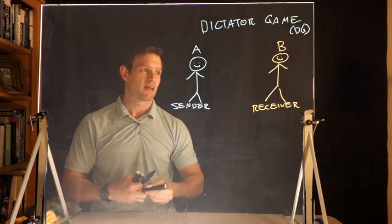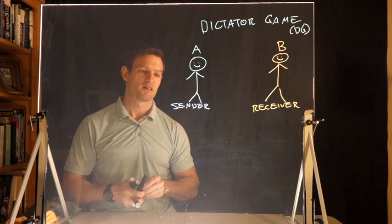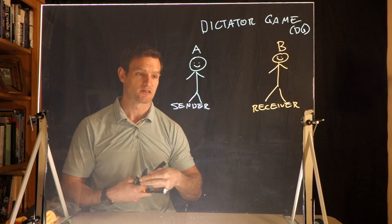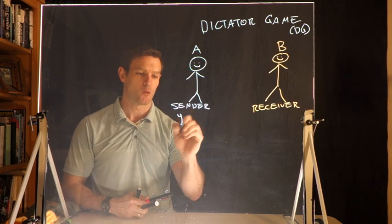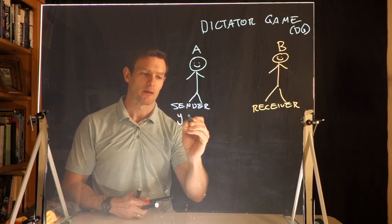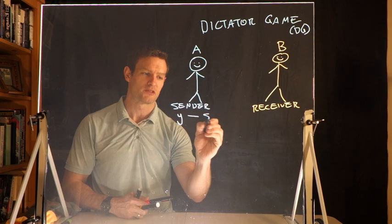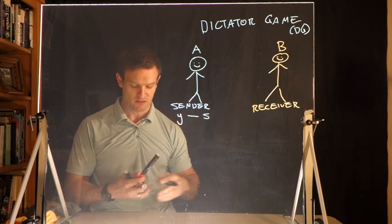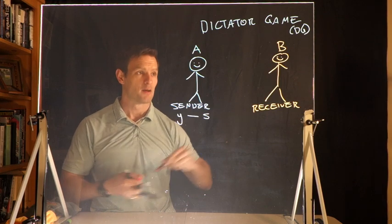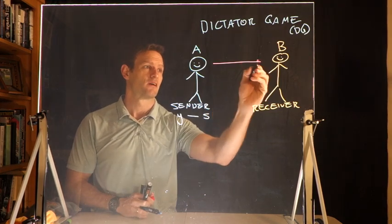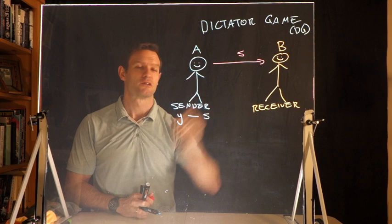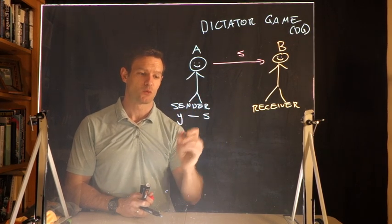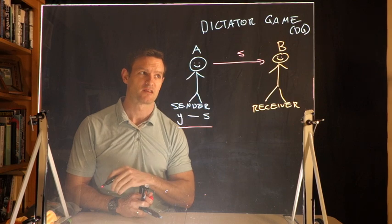Now in this game, the sender is given some endowment. So we said they would have some endowment Y, and then they can give some amount S to person B. So if they send some amount S, A sends amount S to B, which leaves person A with the amount Y minus S.